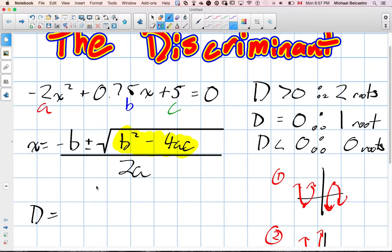The discriminant is here. In this case, it's 0.75 squared. That's our B value. Minus 4 times negative 2 is the A, and the C value is 5. And I can tell you right now,